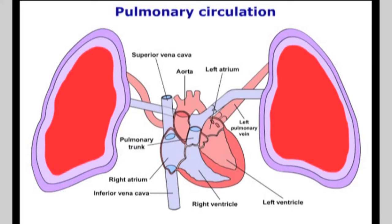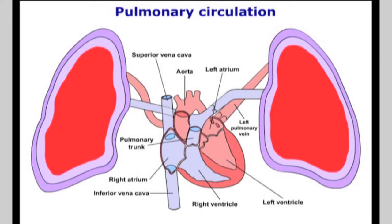Oxygenated blood returning from the lungs to the left side of the heart first enters the left atrium. It is then pushed through the mitral valve into the powerful chambers of the left ventricle. Blood then leaves the left ventricle through the aortic semilunar valves. The systemic circulation is a high pressure system.